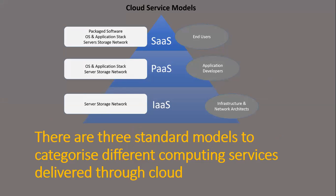What does each provide? SaaS provides a software package or application — for example, if I want a software I don't have on my computer, I find a service providing it online; I am the end user and the software is the product. In PaaS, the platform is shared — the OS or the application stack is what is provided. In IaaS, the server, storage, and network are shared. These are the three standard models: Software as a Service, Platform as a Service, and Infrastructure as a Service.